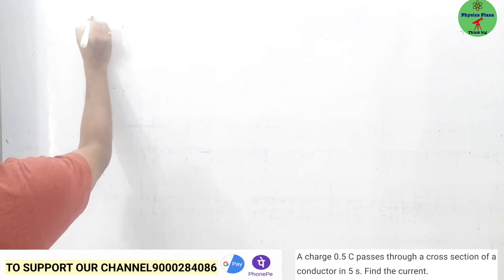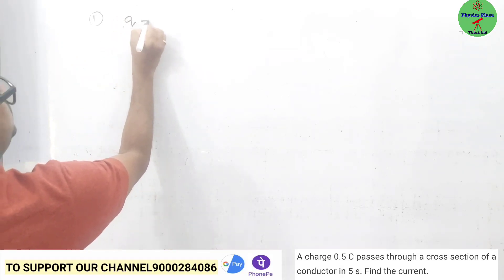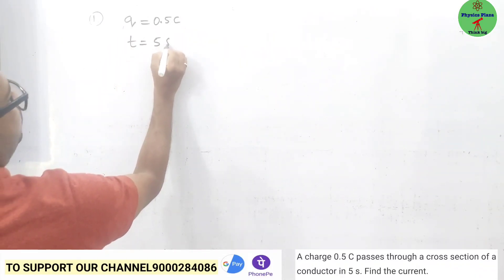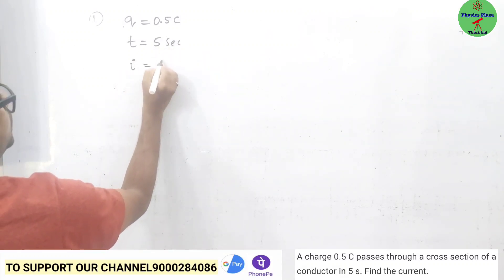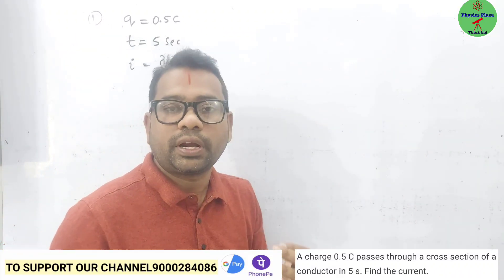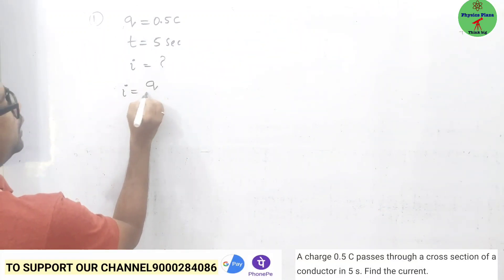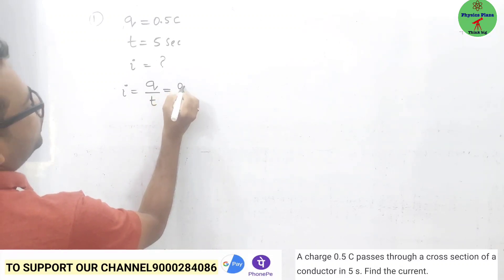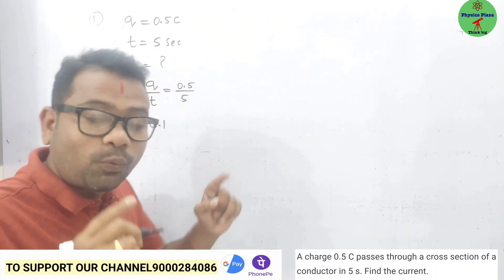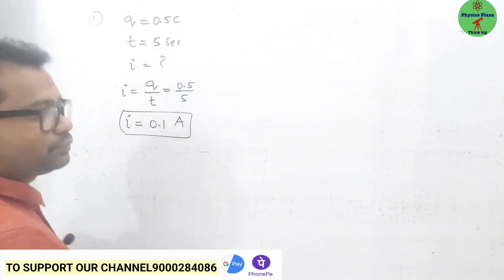As per the first numerical, let us see the data given. A charge of 0.5 coulomb is passing and time is 5 seconds. They are asking us to calculate the current. From the definition of current, I is equal to Q by T. So I = 0.5 / 5 = 0.1 ampere.